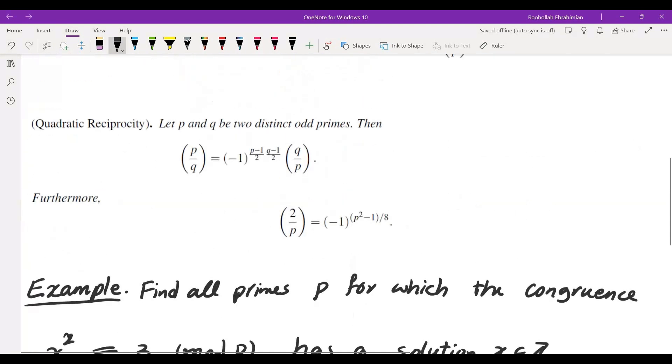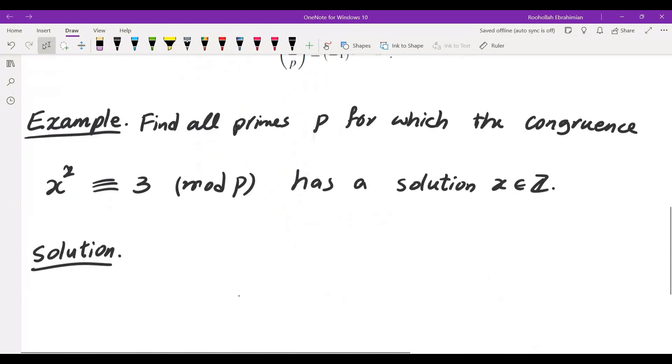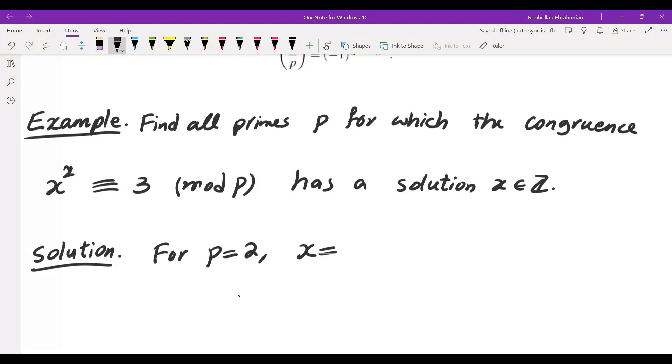Okay, because in the quadratic reciprocity theorem, we need the P and Q to be odd, I'm going to have to check P equals 2 separately. For P equals 2, X equals 1 is a solution.